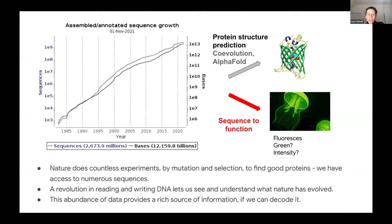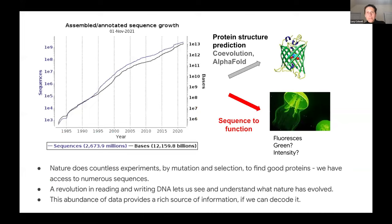As we all know, there's tons and tons of sequence data. I borrowed this plot from the EBI ENA statistics service — unfortunately they've stopped updating it, so I can only show the plot from last November. There's just such an overwhelming amount of sequence data, and that's really led to enormous strides in protein structure prediction and co-evolution methods. The amazing progress made by AlphaFold and AlphaFold2 has really been enabled by this huge amount of data, and I think there's enormous potential to solve other problems too.